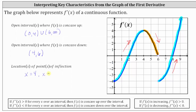I do want to point out that we are told f of x is a continuous function, so even though the derivative function is undefined at x equals six, we know f of x is continuous and defined at x equals six. Notice how from our work above, our function changes from concave down to concave up at x equals six, again verifying we have a point of inflection at x equals six.